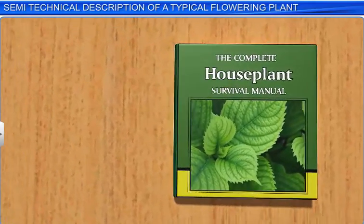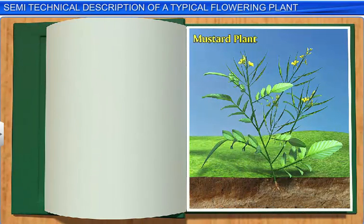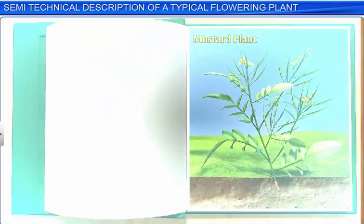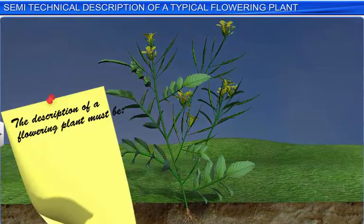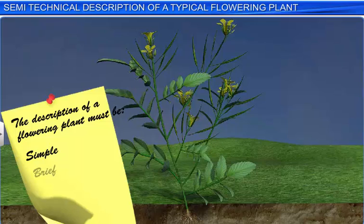Technical descriptions of plants are very useful in the study of floral morphology and help taxonomists in the easy identification and classification of plants. The technical description of a flowering plant must be expressed in scientific language and must be simple, brief and sequential.